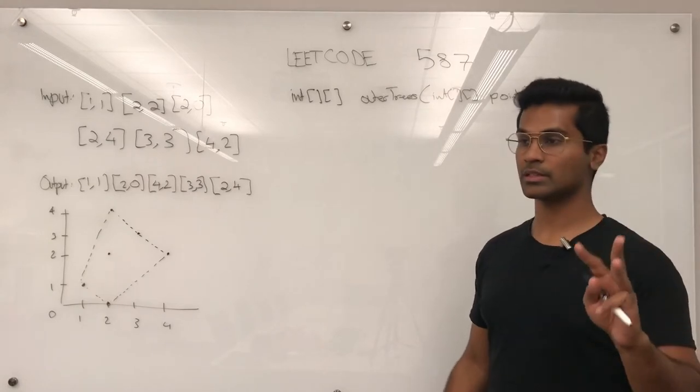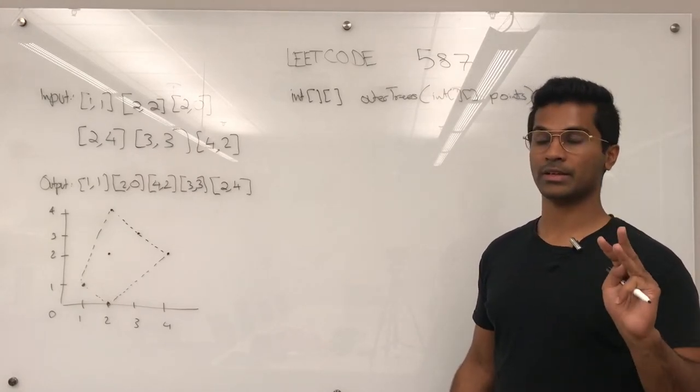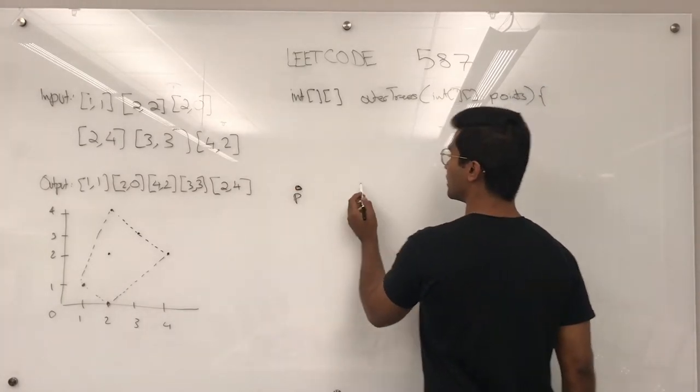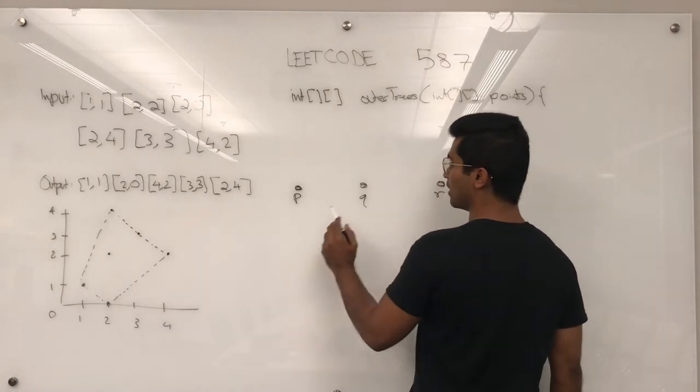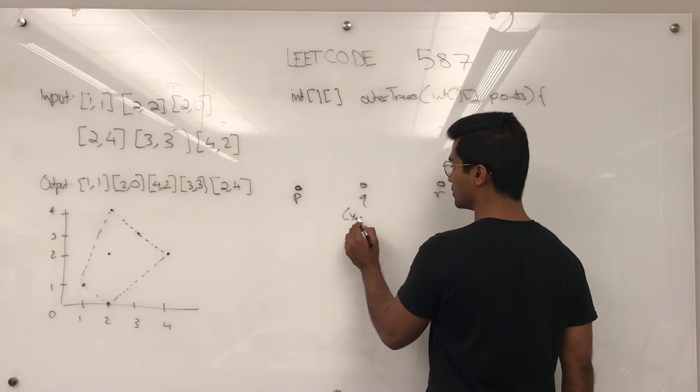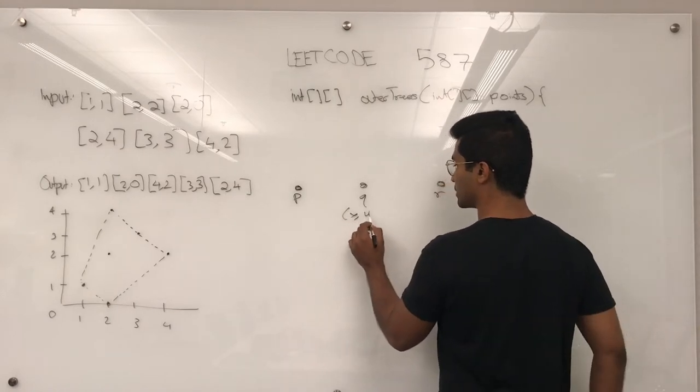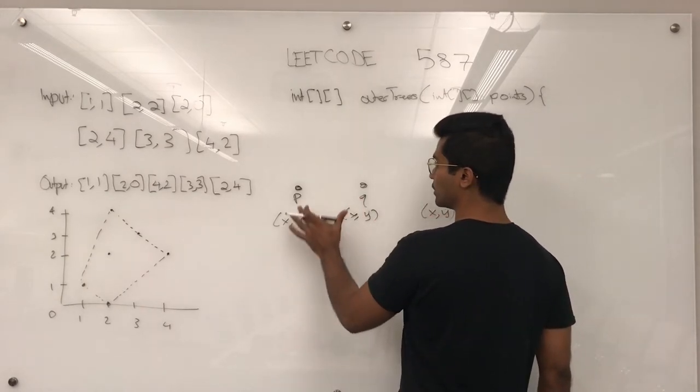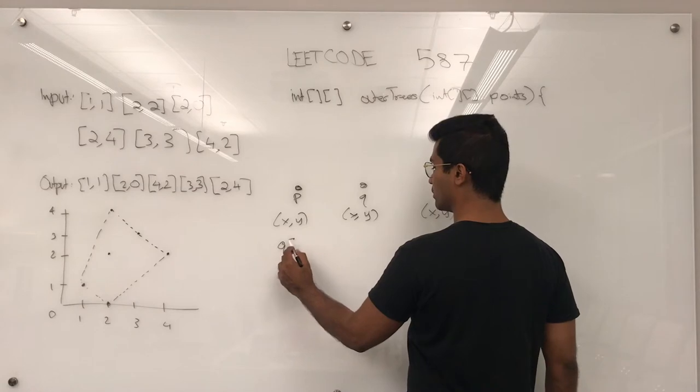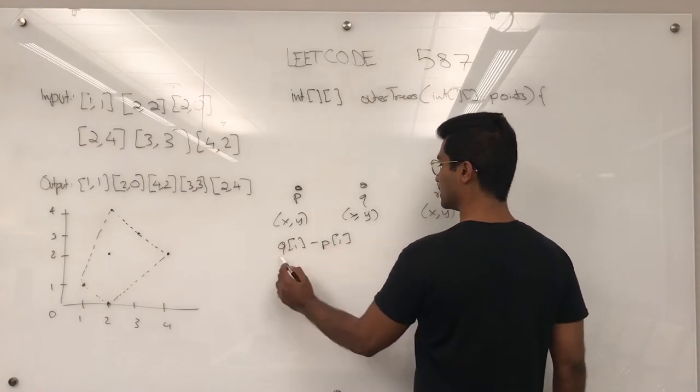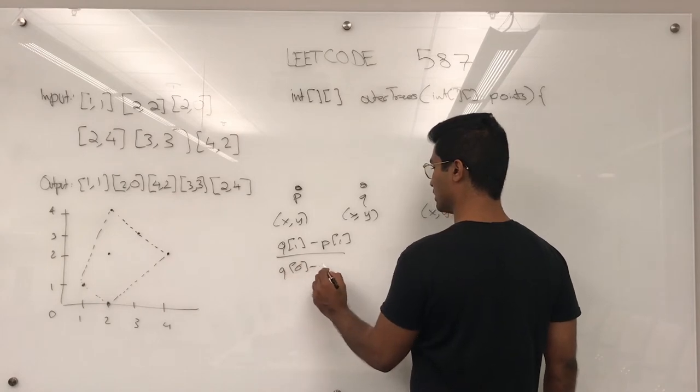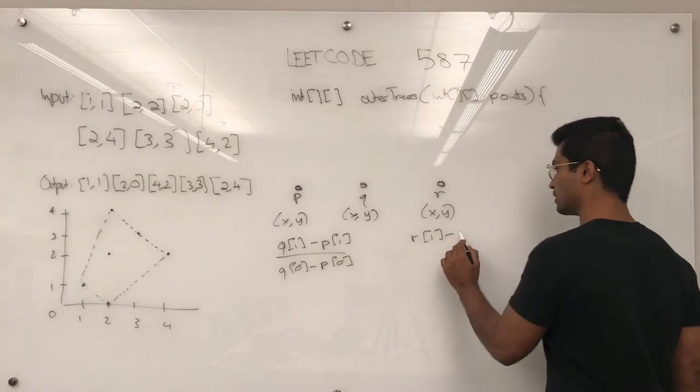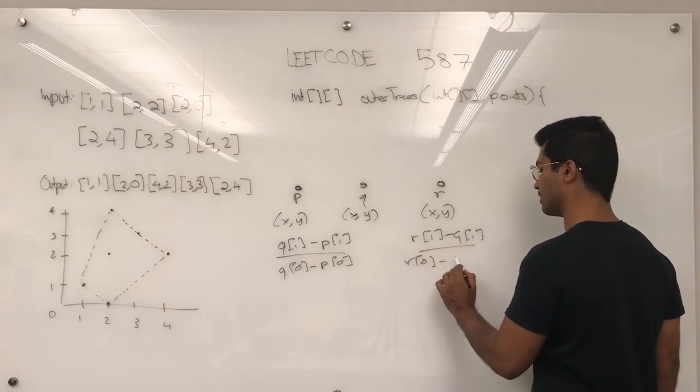So if we have three points, this is how we construct the clockwise or anti-clockwise for them. So we have coordinate p, q, r with values x, y, x, y, x, y. Now the slope of this is going to be q of 1 minus p of 1 over q of 0 minus p of 0, and then r of 1 minus q of 1 divided by r of 0 minus q of 0.